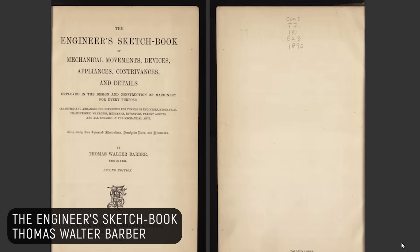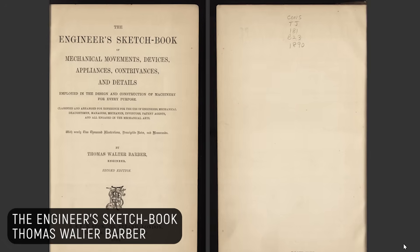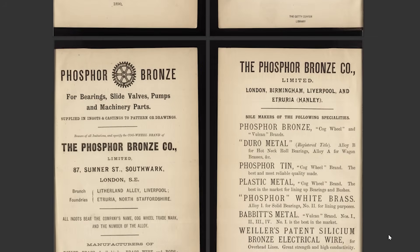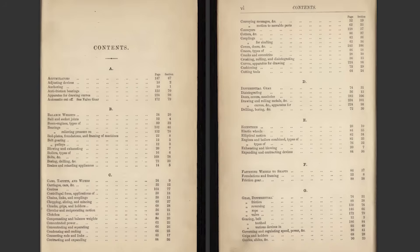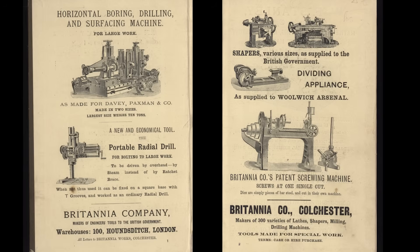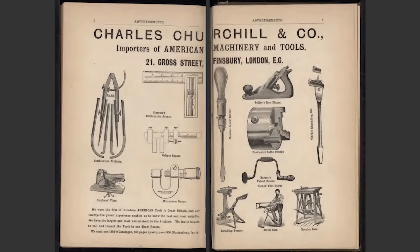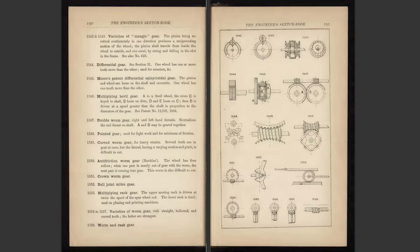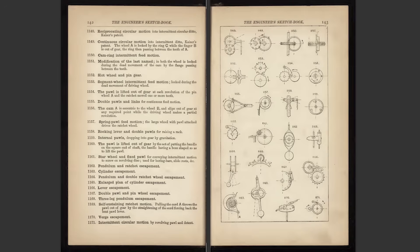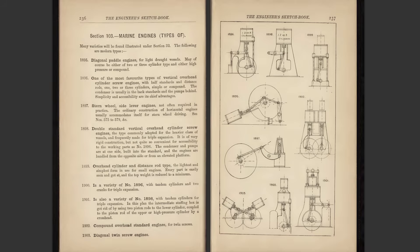Reference number two is the Engineer's Sketchbook of Mechanical Movements by Thomas Walter Barber, published in 1890. This book is really interesting because it provides a much wider glimpse of what was going on in the engineering and manufacturing space at the time. It has illustrations of machinery and componentry of all kinds with information about the companies that made them, which is really fascinating. But the mechanism details I'm interested in for my projects are fairly sparse and few and far between.